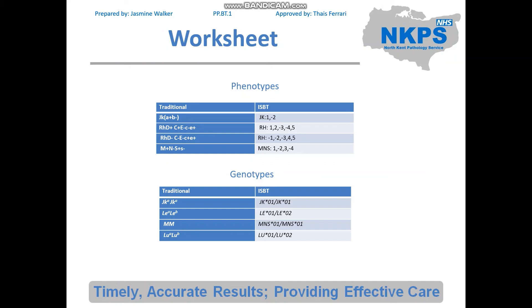Moving on to genotypes: starting with JKA/JKA — since JKA is the first antigen in that blood group, it will be JK*01/JK*01. Then LEA/LEB, which is LE*01/LE*02. Then MNS*01/MNS*01, so that's MM. And LUA/LUB, because you've got LU*01 and LU*02. Hopefully that all makes sense.